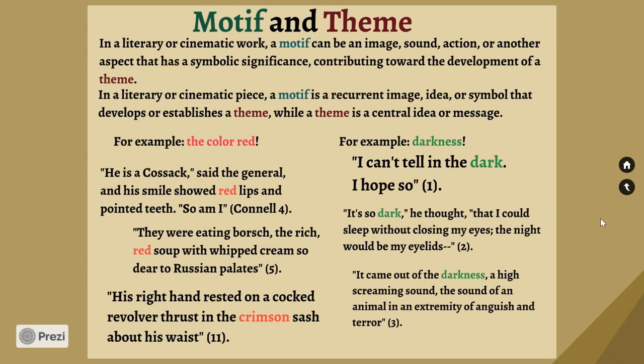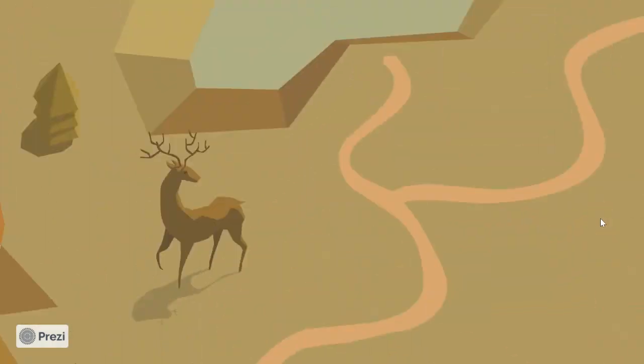Darkness could be symbolic for the unknown. But 'the unknown' is not a theme. Is it the fear of the unknown? Do humans always fear the unknown? Now we're getting toward an idea of a theme. There are a lot of ways to build a theme — you could start with a subject, conflict, topic, or motif and then build from there. Ask: what is meaningful or symbolic about the motif? What does the color red symbolize? What kind of ideas does it generate? Fear of the unknown is not a theme — that's a topic. What exactly is Connell trying to convey about the fear of the unknown? Once we answer that, we get into the theme.